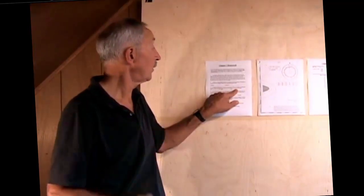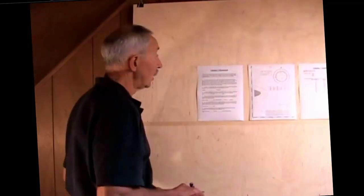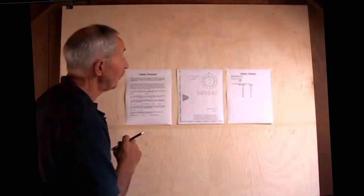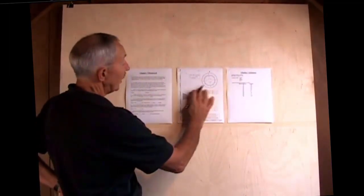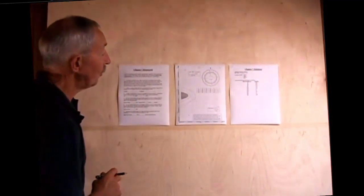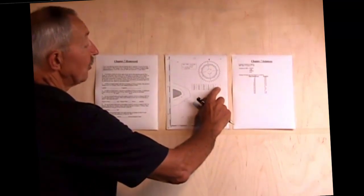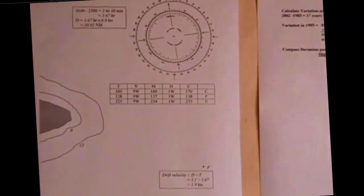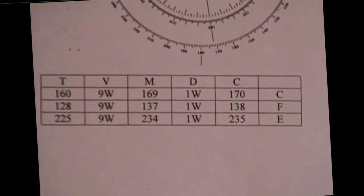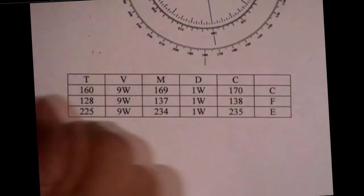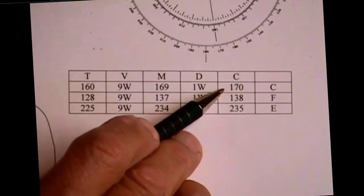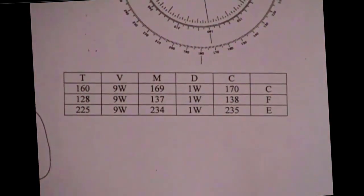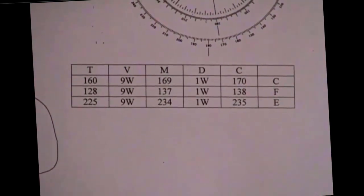Let's first convert our bearings to true so we can plot them. I've entered a little table here that shows all the bearings to the MDC. C refers to course, F refers to the bearing on point F, and E refers to the bearing on point E. The question gave a course of 170 PSC, and the two bearings were 138 PSC and 235 PSC.